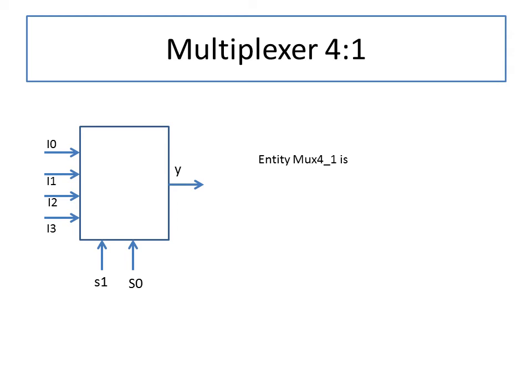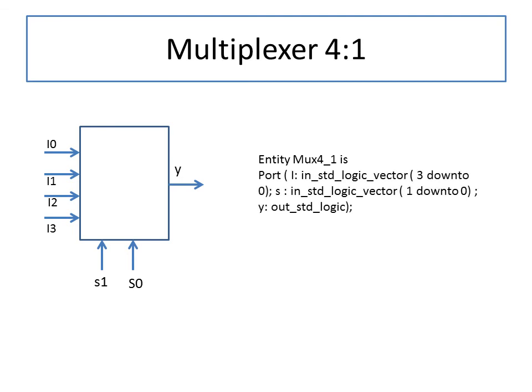For the multiplexer entity, we write 'entity mux_4to1 is'. In the port, we define input I as an input standard logic vector of length 3 downto 0 — where I3 is the MSB and I0 is the LSB. The select line S is an input standard logic vector of length 1 downto 0 for S1 and S0. The output Y is standard logic. This shows how vectors are declared in entity definitions.